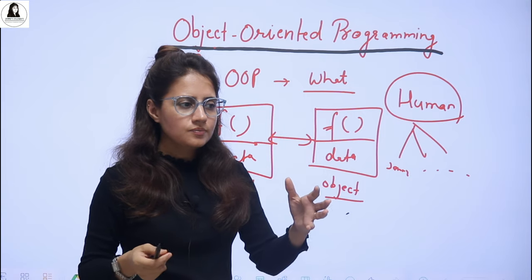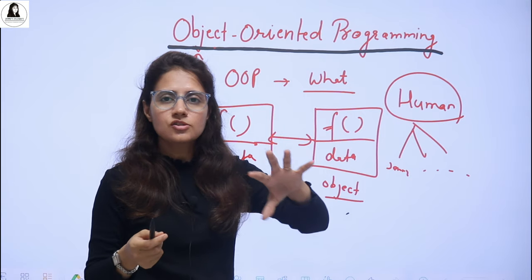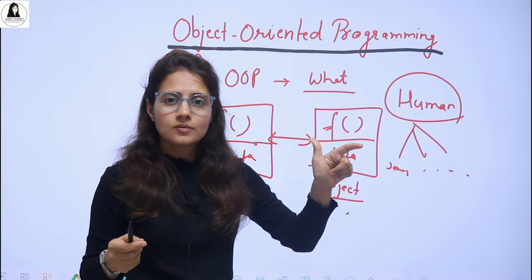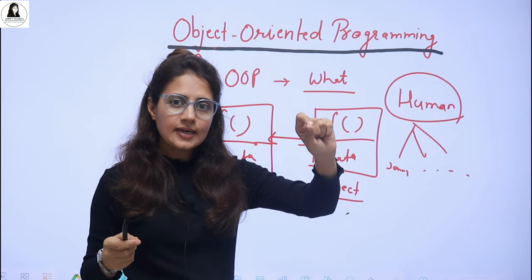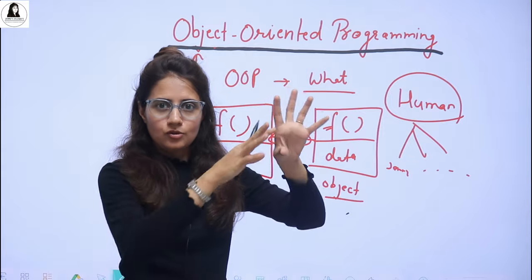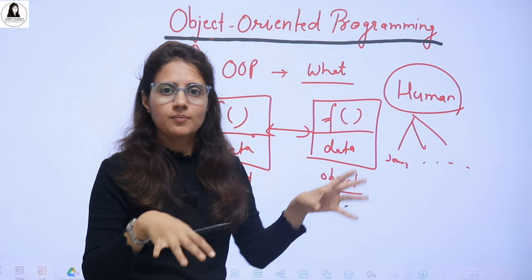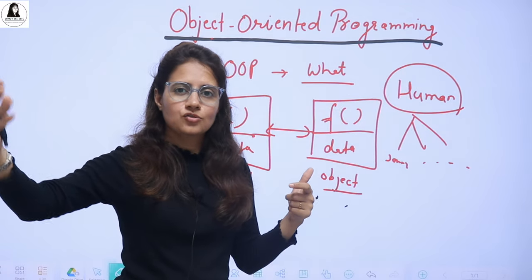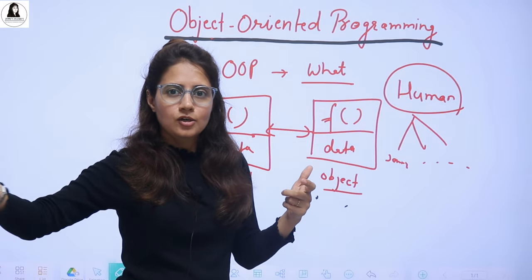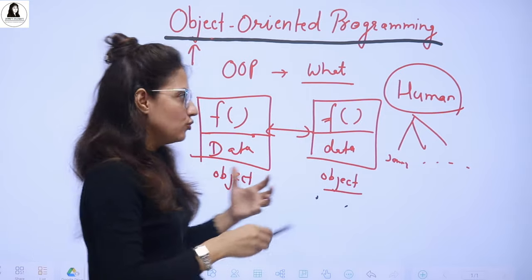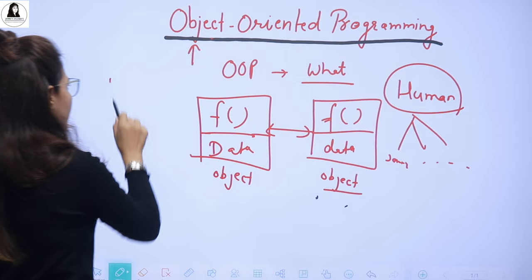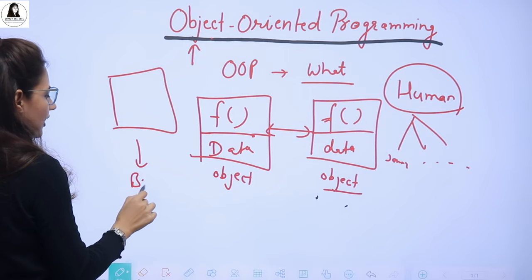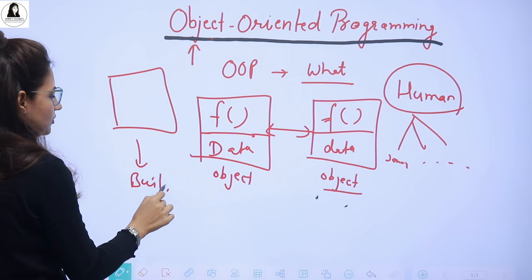From this blueprint we can derive many objects. Like Jenny, or many other objects as well. A blueprint is like — in construction, when you go to an architect there would be one map, and after that is finalized, construction starts. So one map is the blueprint, and the actual building is the object. Now you understand classes and objects — in detail you will see this in the next video.